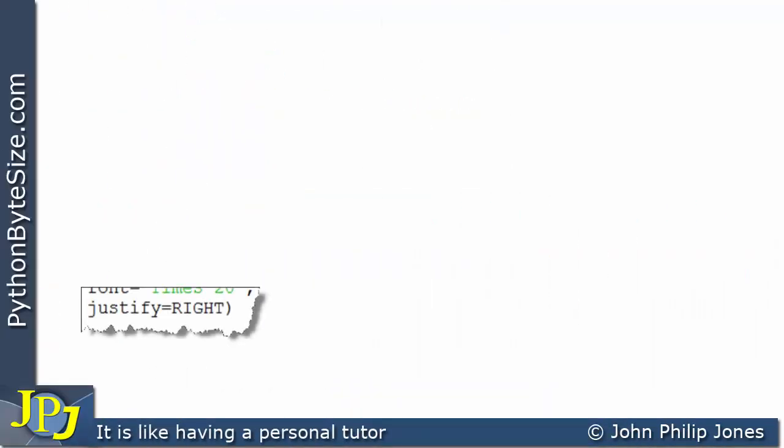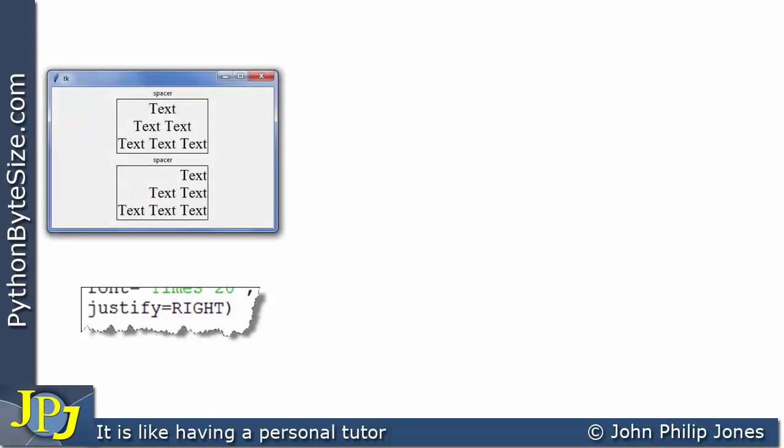Let's consider this snippet of code here. Justify is assigned RIGHT. That's from the program we looked at earlier in this video. When that program executed, this is what we got. If you look at this label, you can see that the text has been justified to the right.